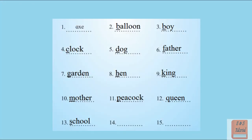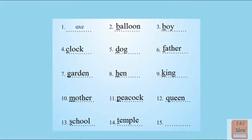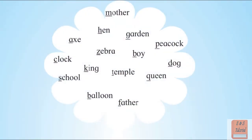After S, we have T. With T, the word temple is given. I do not have any word with U, V, W, X, or Y. So the last word we have is with Z. With Z, we have zebra.